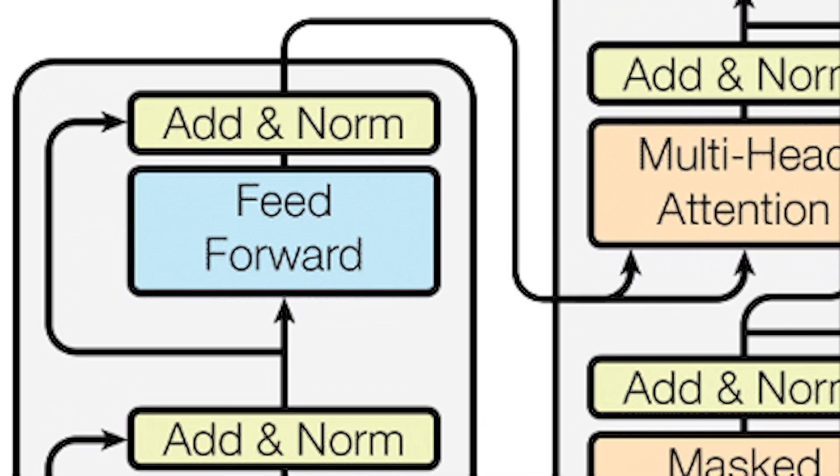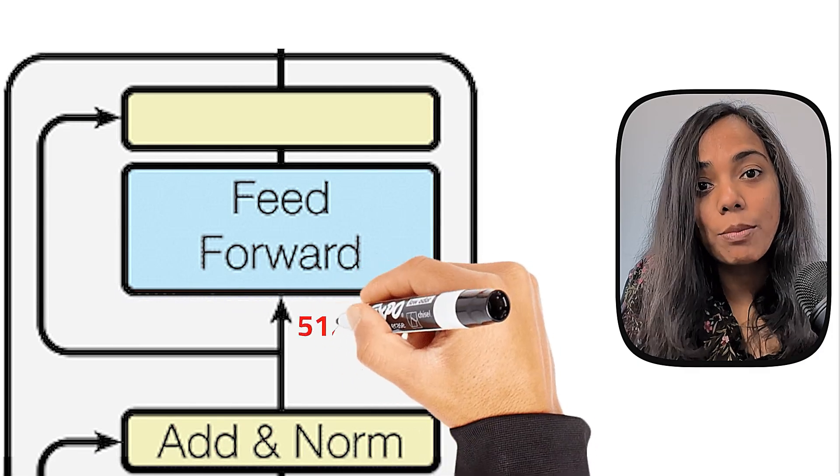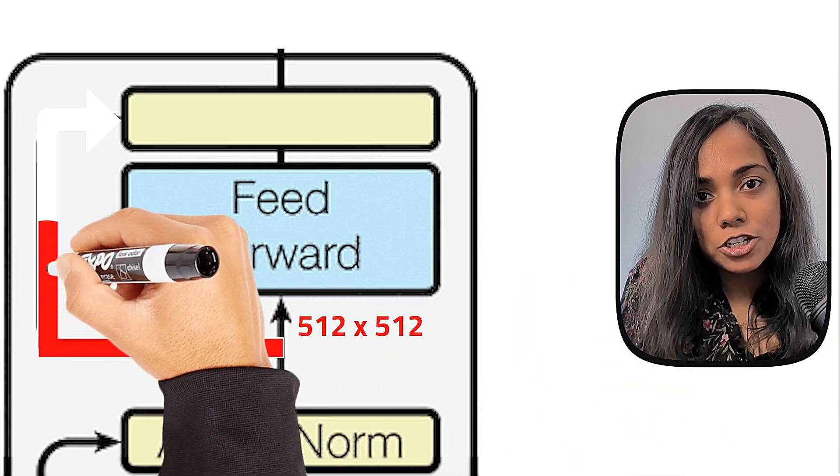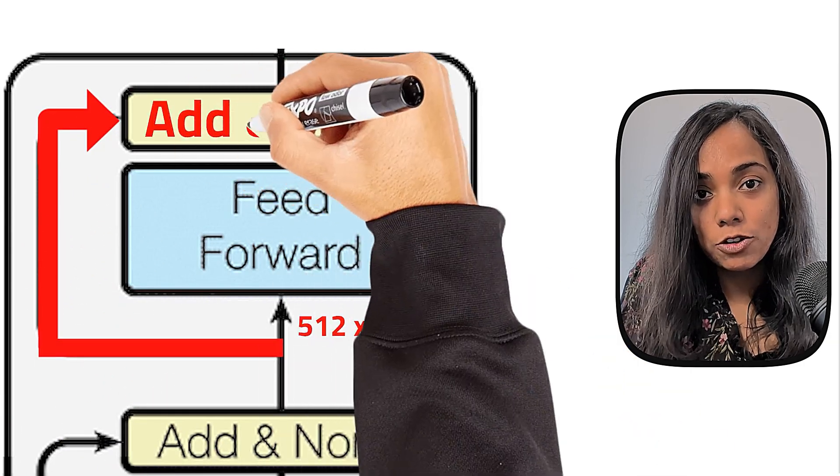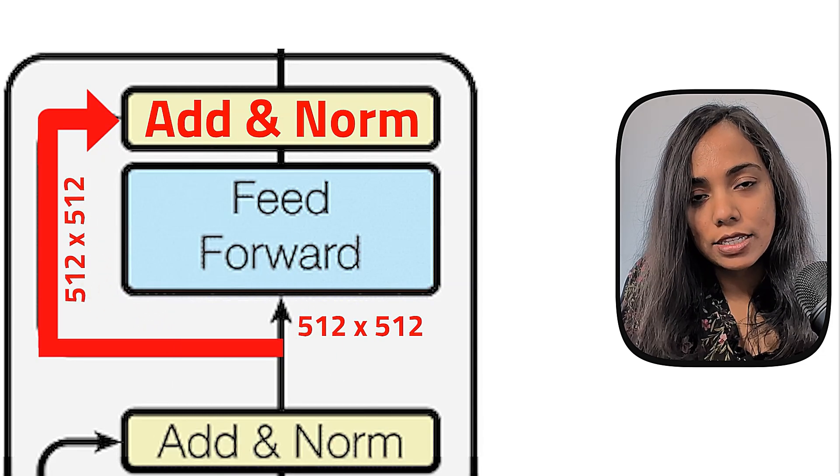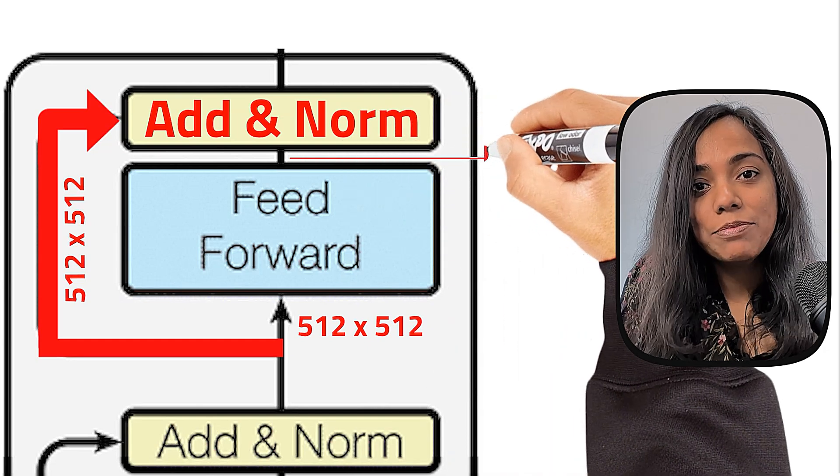There is a layer normalization going on after these loops called add-and-norm. So the input of a sub-layer gets added to the output of the sub-layer followed by a layer normalization.